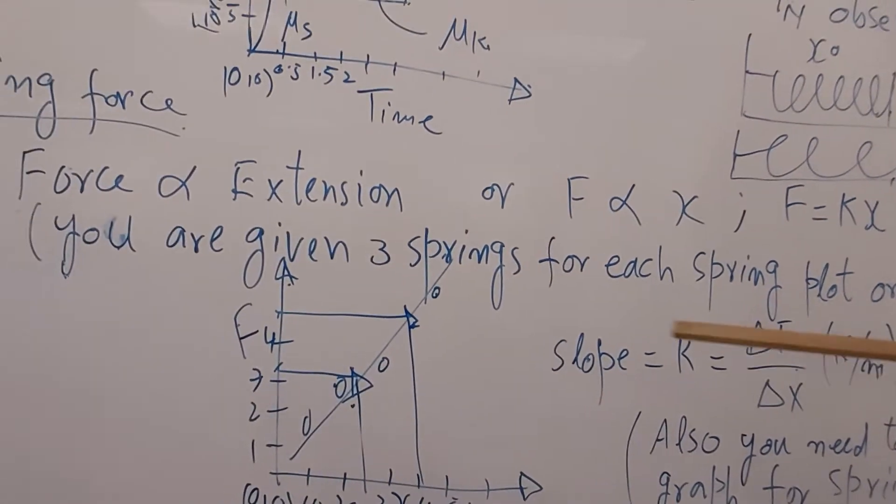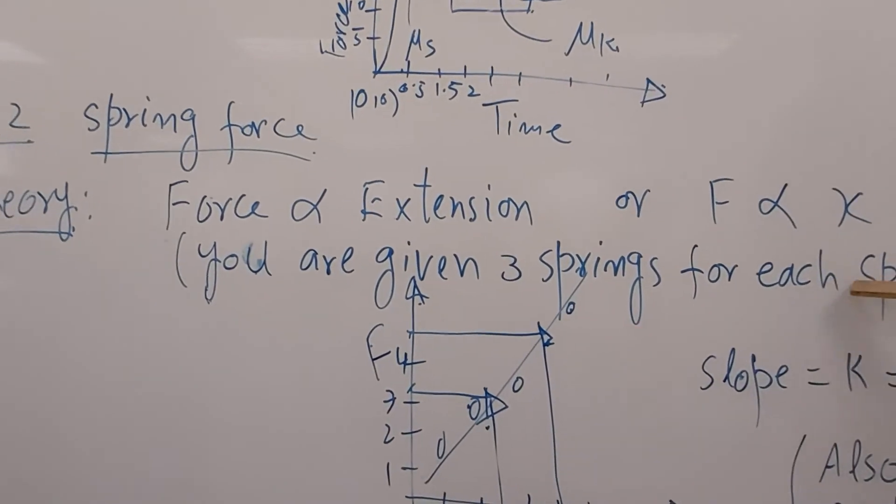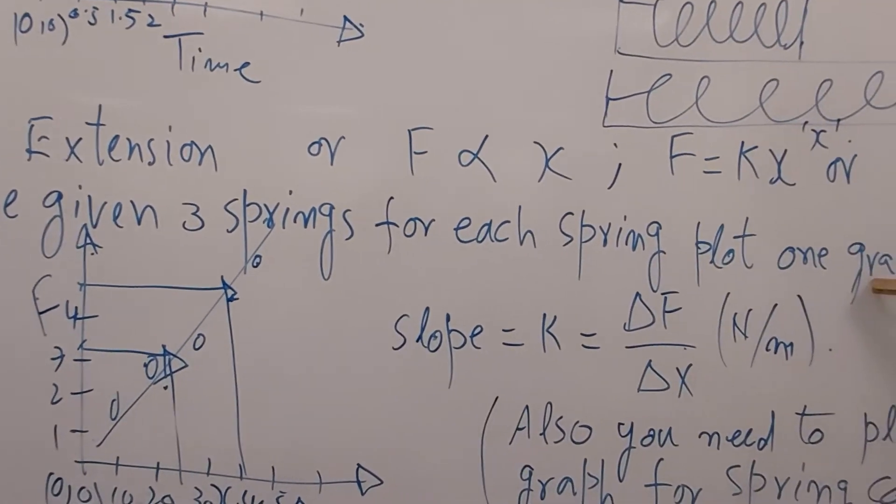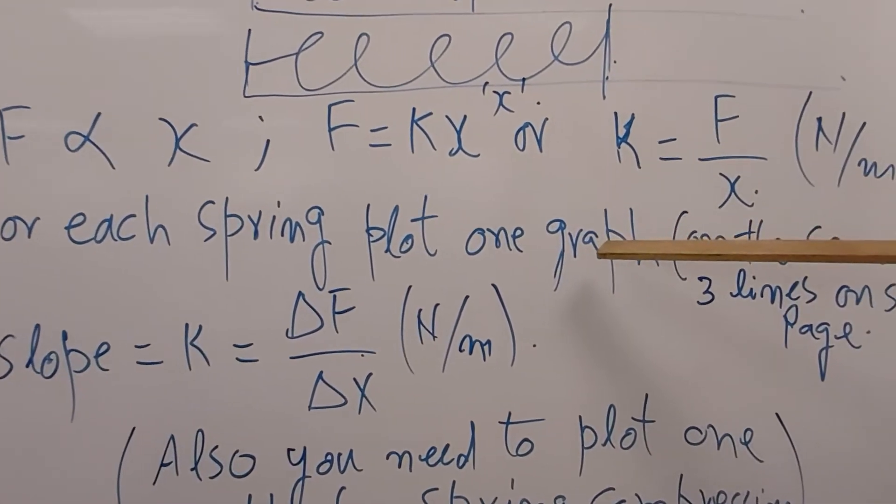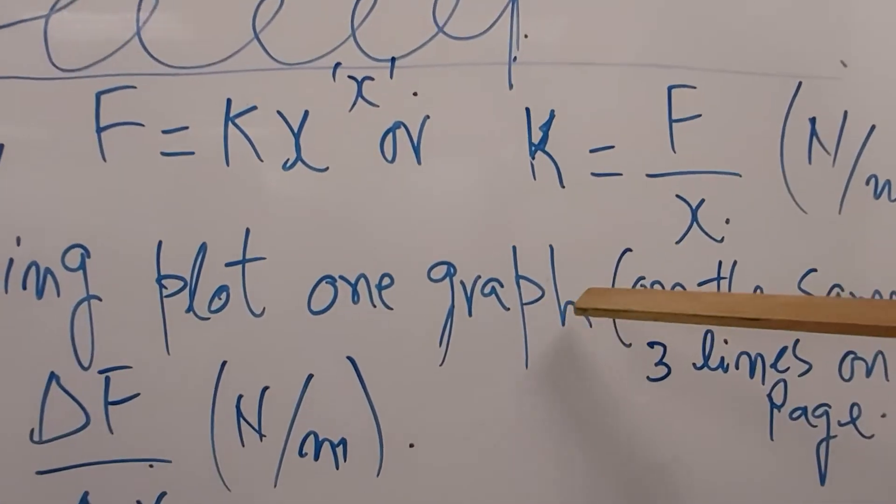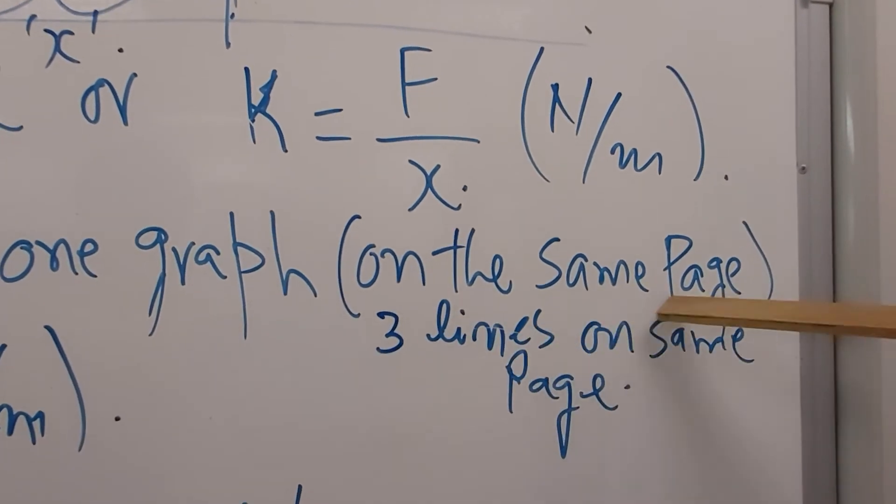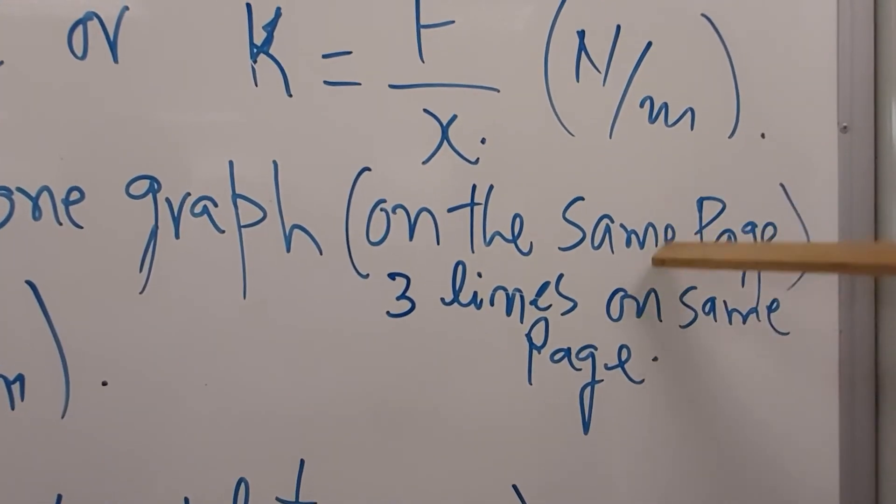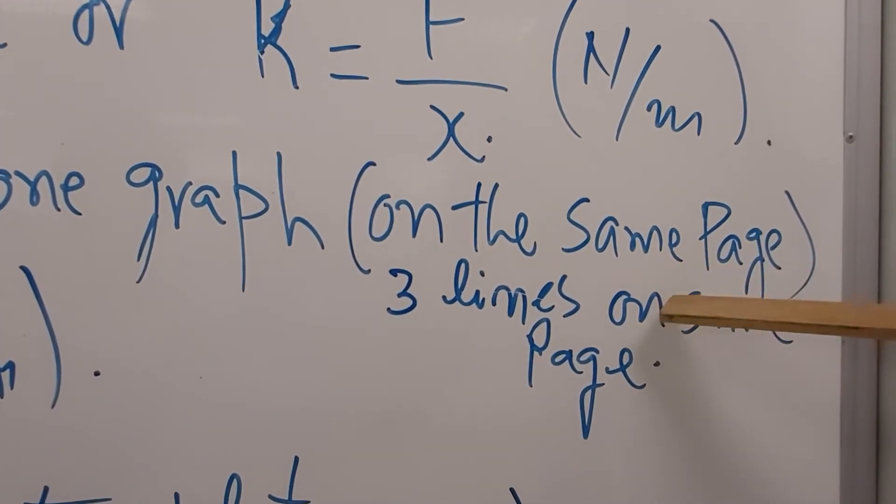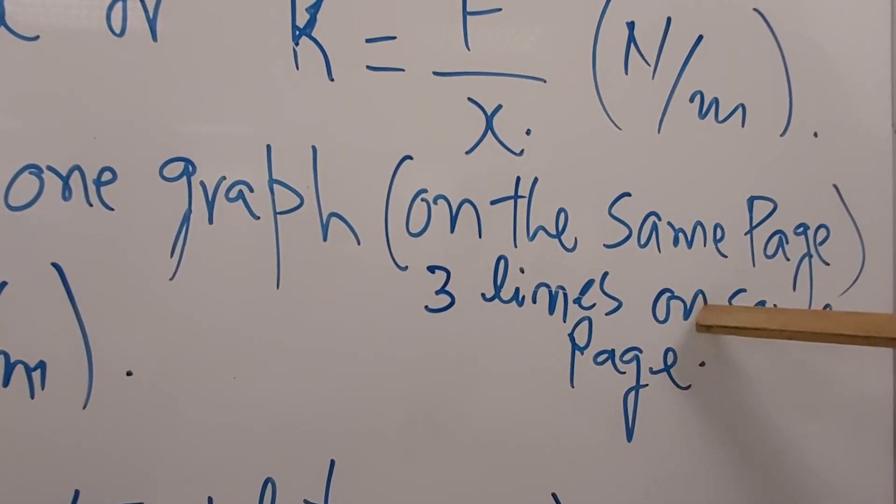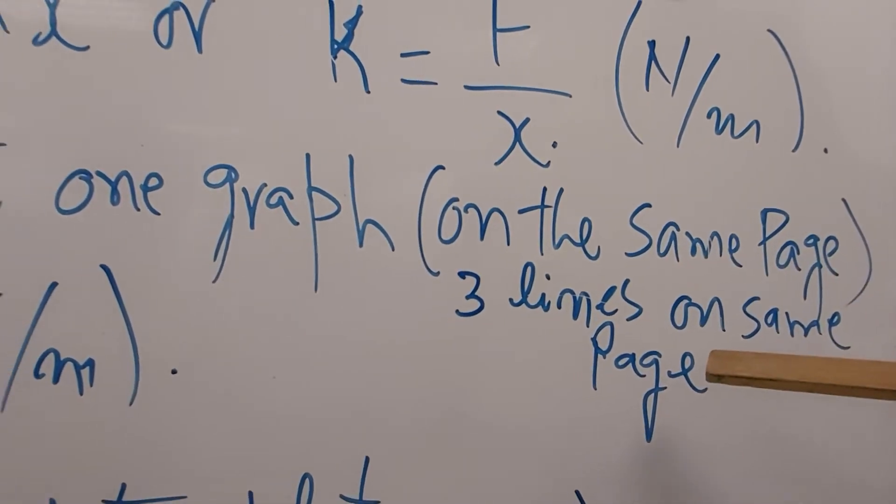We will give you three springs. For each spring plot one graph, so you have three graphs. But you can plot three graphs on the same paper, on the same page - three lines on the same page. You don't have to have three separate papers. You will get three lines, three slopes, and three force constants.